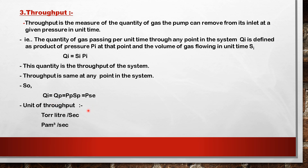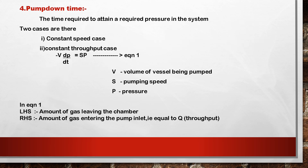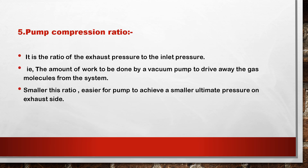The unit of throughput is Torr·liter per second or Pascal·meter³ per second. Pump down time is the time required to attain a required pressure in the system. There are two cases: constant speed and constant throughput. The governing equation is −V dp/dt = S_p, where V is the vessel volume, S is pumping speed, and p is pressure. The left-hand side represents gas leaving the chamber and the right-hand side S_p equals throughput Q.